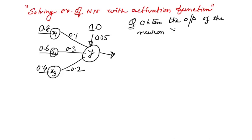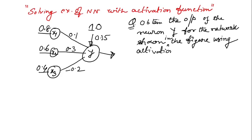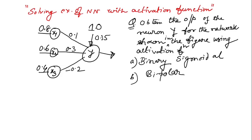Obtain the output of the neuron Y for the network using activation function. So first let us have a binary sigmoidal function, binary sigmoidal activation function. And in the second case,